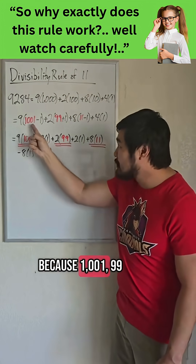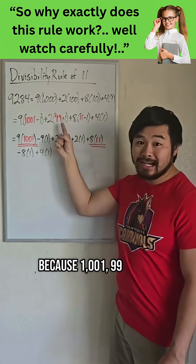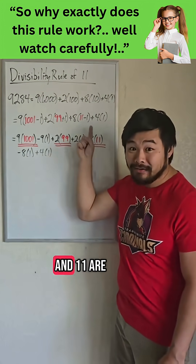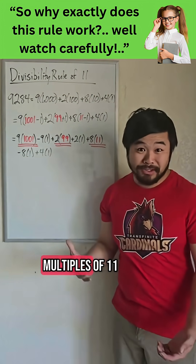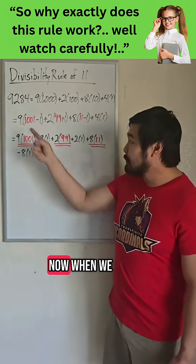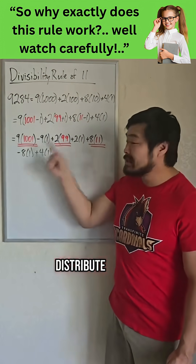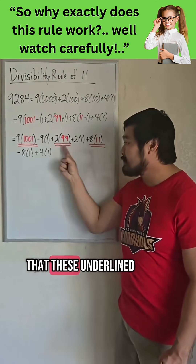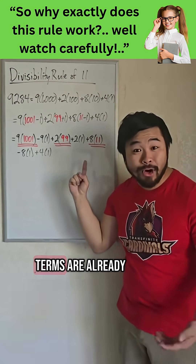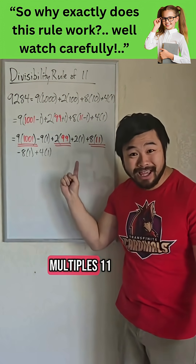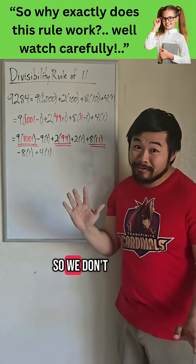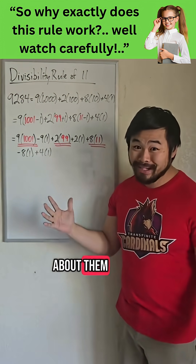Because 1,001, 99, and 11 are multiples of 11. Now when we distribute, we can see that these underlined terms are already multiples of 11, so we don't have to worry about them.